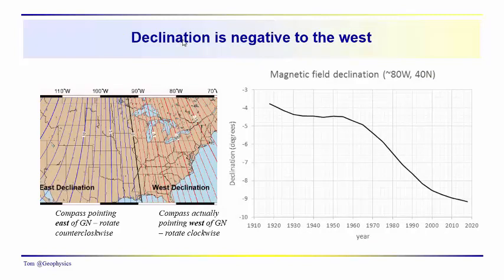So, declination is negative to the west, meaning west declination. So, compass needle is actually pointing west of geographic north. And when we do that, if we want to set our compass when we're in the field, we need to rotate the compass clockwise, ten degrees, five degrees, whatever, so that we get an accurate representation showing that our compass is actually pointing to the west of true north. We need to rotate the north on our compass clockwise.